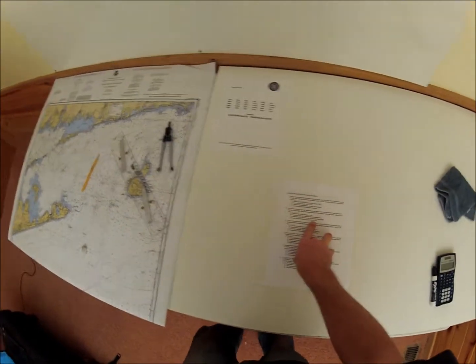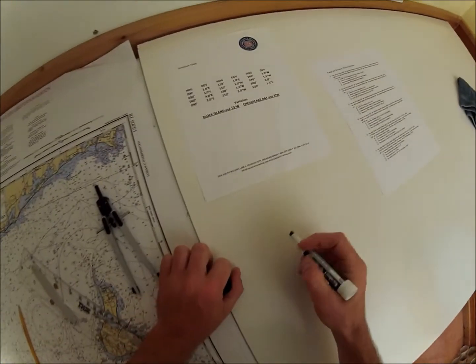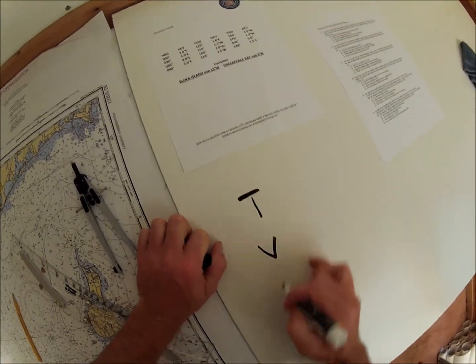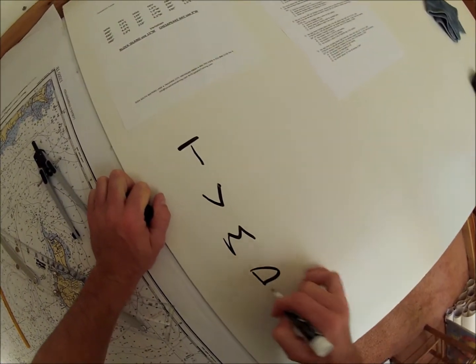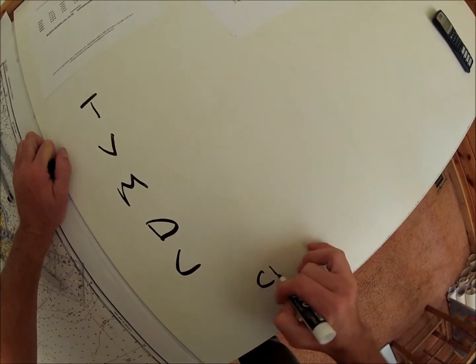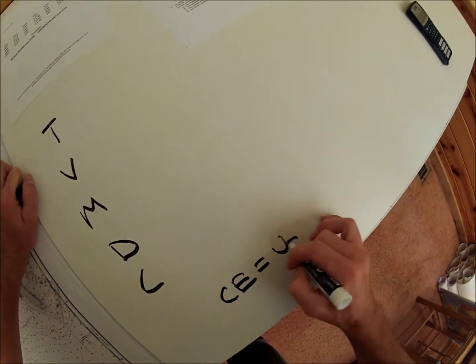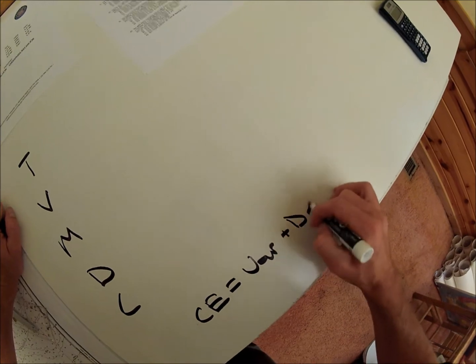Let's solve this problem. I'm going to set up a template here, the same one I always set up. T, V, M, D, C, Compass Error equals Variation plus Deviation.